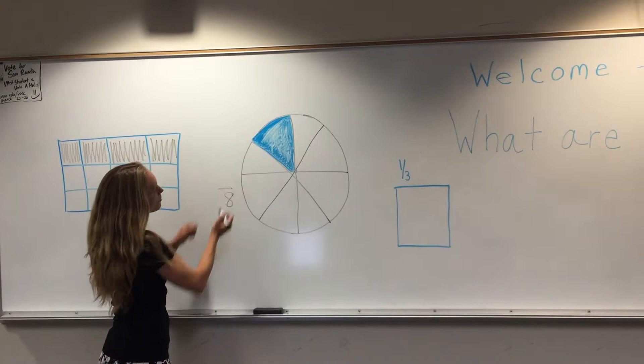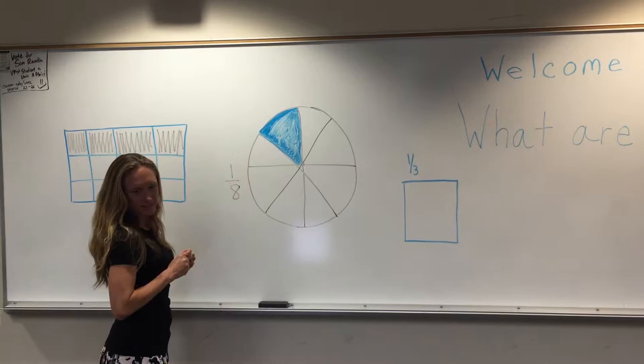And on top, this blue one is how many you are going to eat. So you are going to have one piece of pizza. Does that make sense?